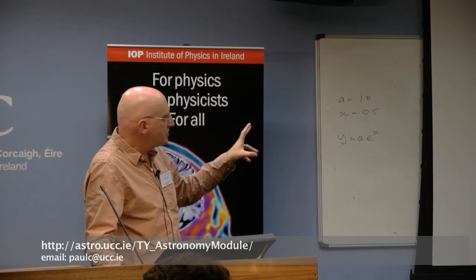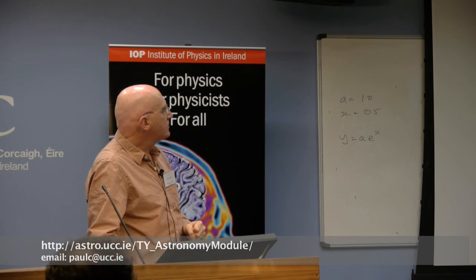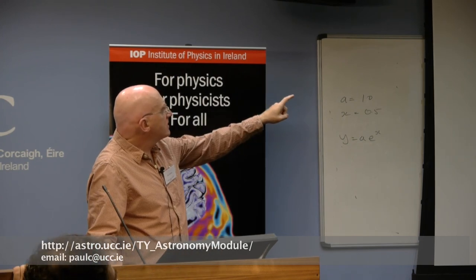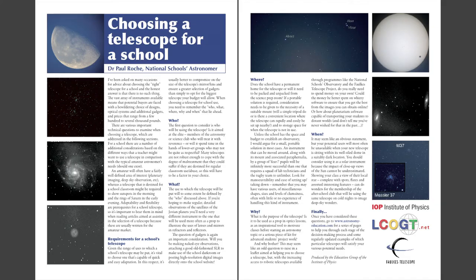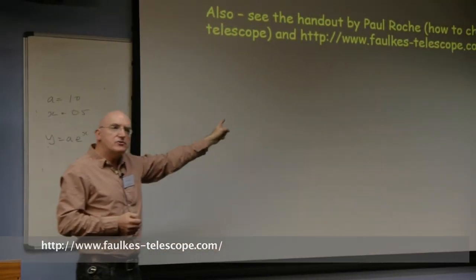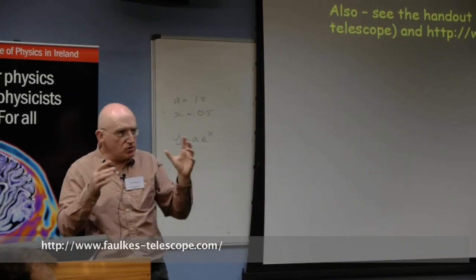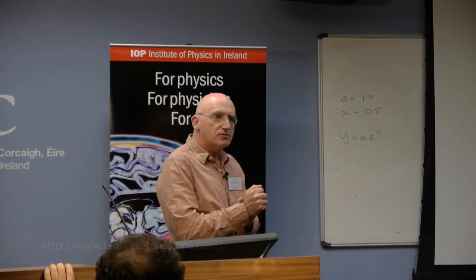There's no end of stuff that can be done in astronomy that can encourage students to do physics in the leaving cert. I'd also say if you're thinking about getting a telescope, there's a good handout just outside by Paul Roach about how to choose a telescope for the school. And of course there is the fantastic Fox Telescope that you can use online from Hawaii or Australia in the classroom. The students can use them in the classroom for free in real time. Please check that out too.